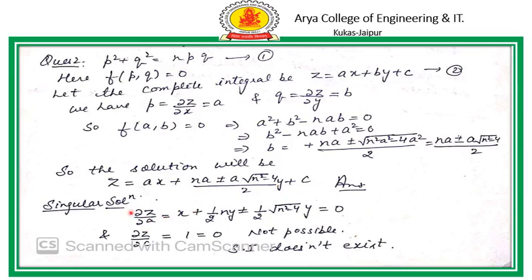Putting B into equation number 3, we get the relation in terms of A. For the singular integral, ∂Z/∂C equals 0 gives 1 equals 0, which is not possible. So the singular integral does not exist in this question. For the general integral, we take C equals a function of A, and the general integral is obtained from Z and ∂Z/∂A equals 0.